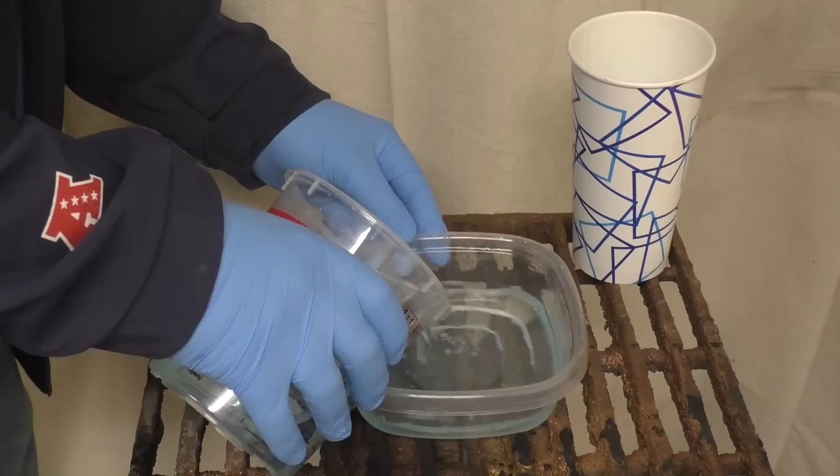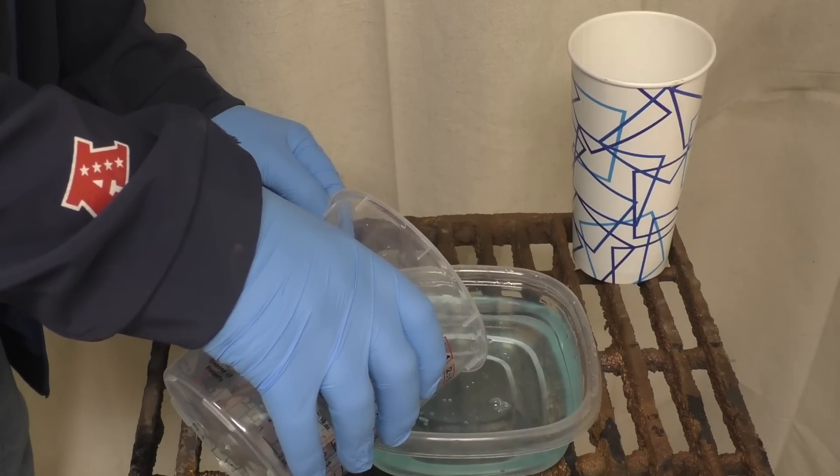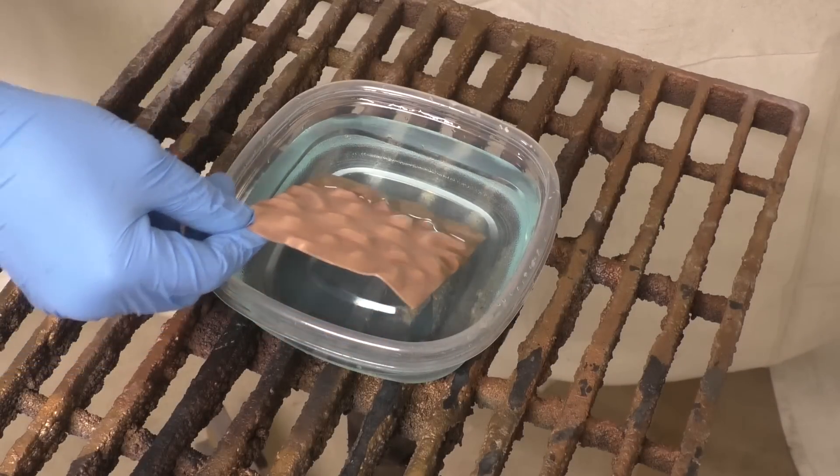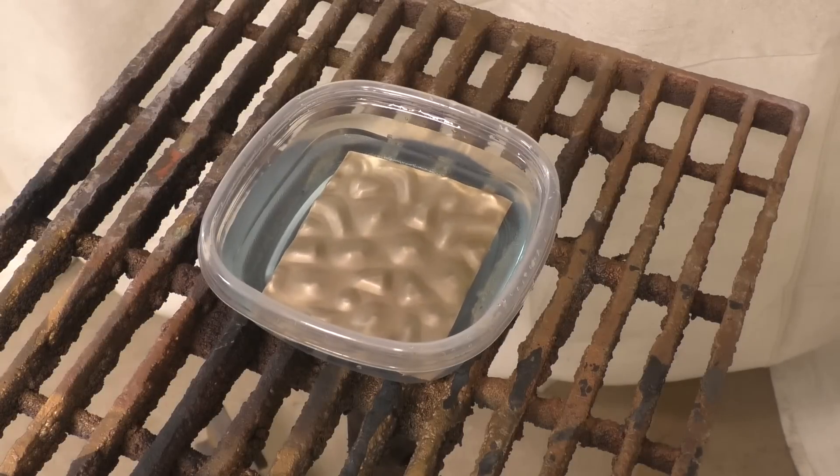We're going to pour that into our Tupperware container. What's nice is you can put this in PVC, you can do stainless, but this is just a regular old sandwich Tupperware container. We're going to take our piece of copper here which we've already cleaned and put it in.